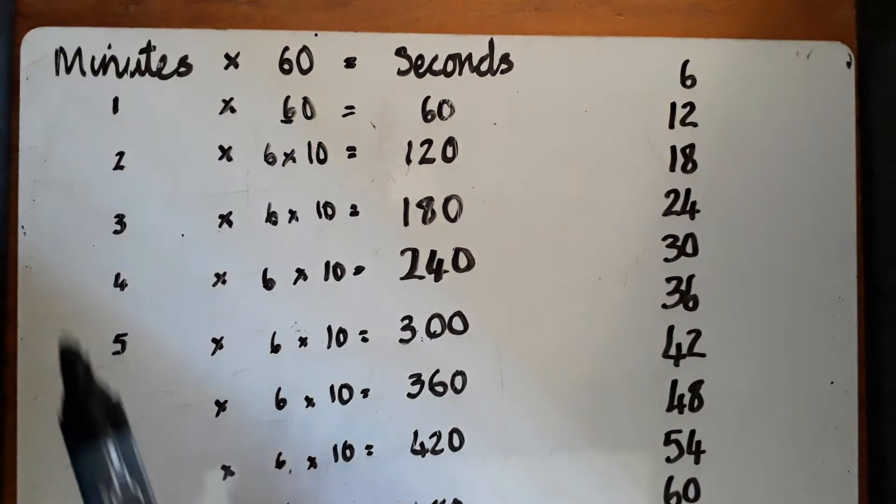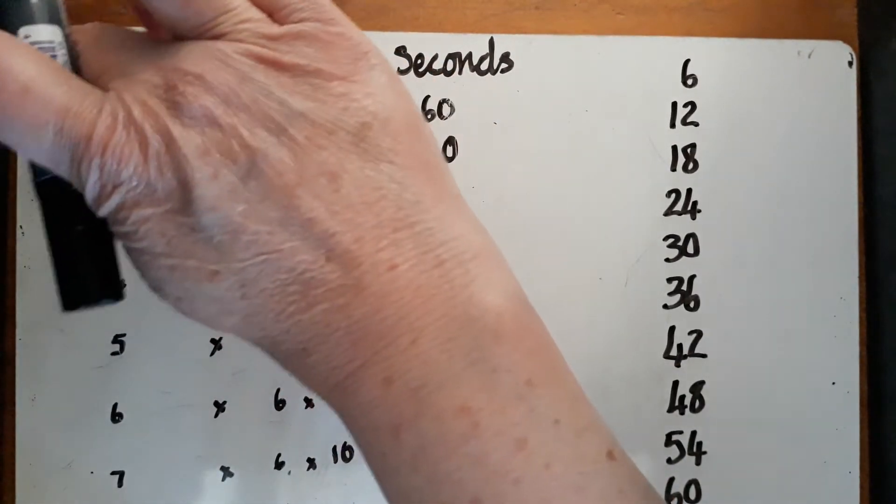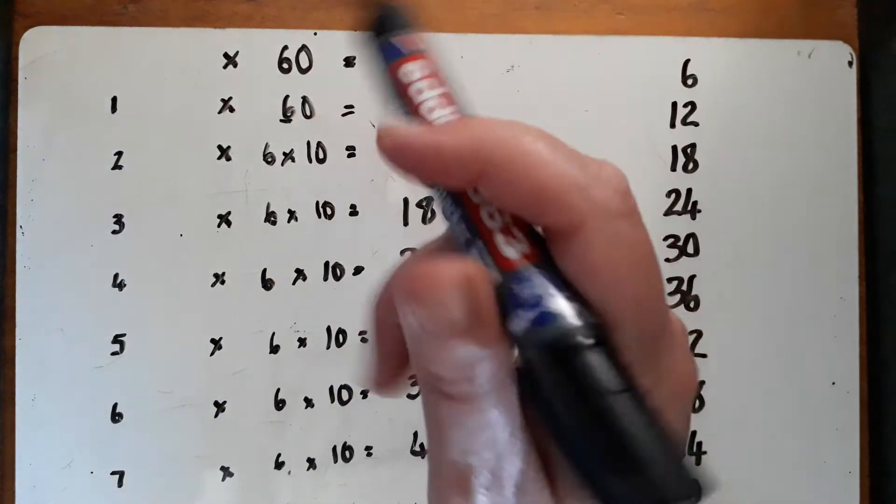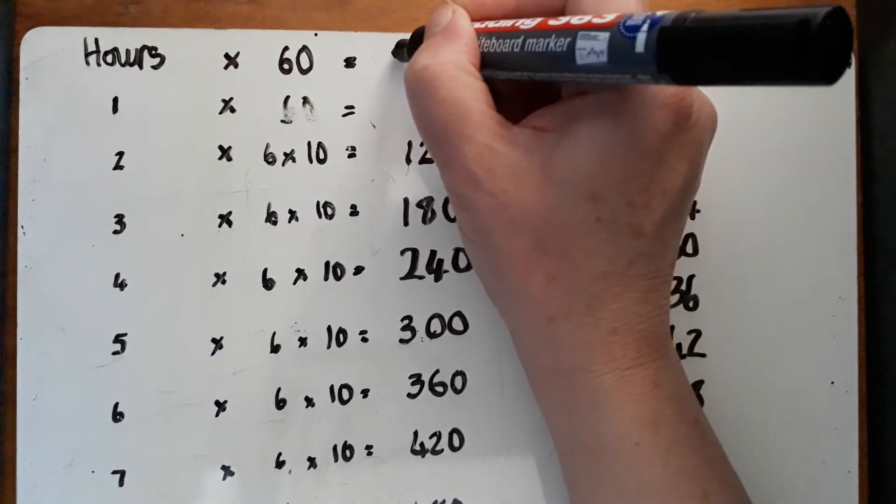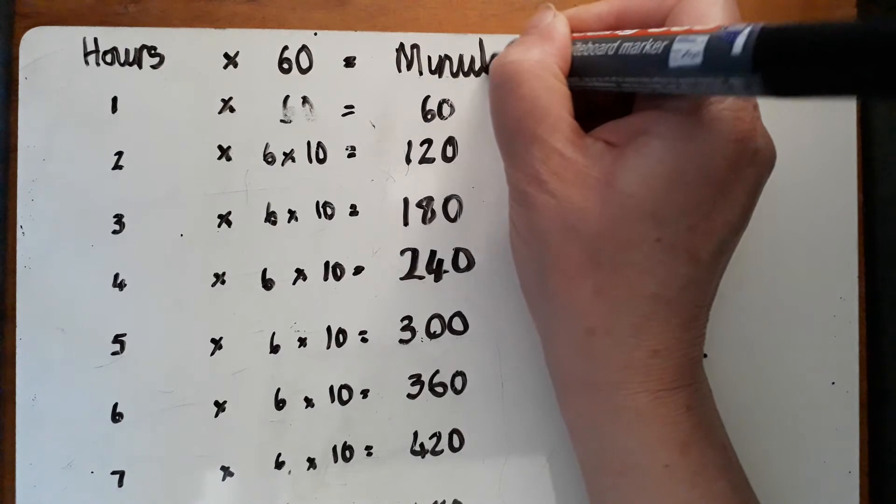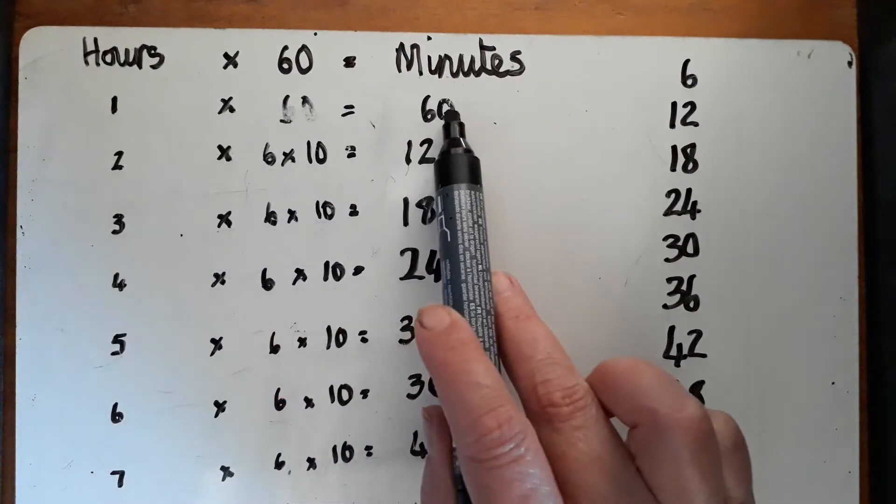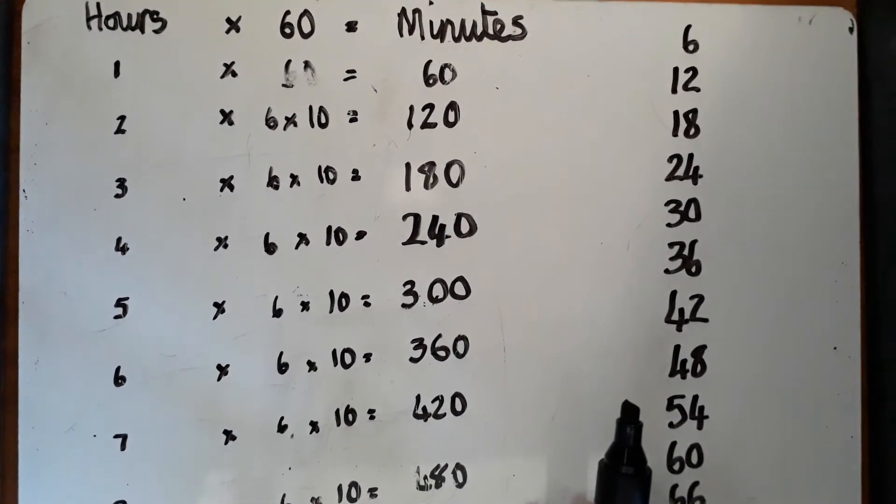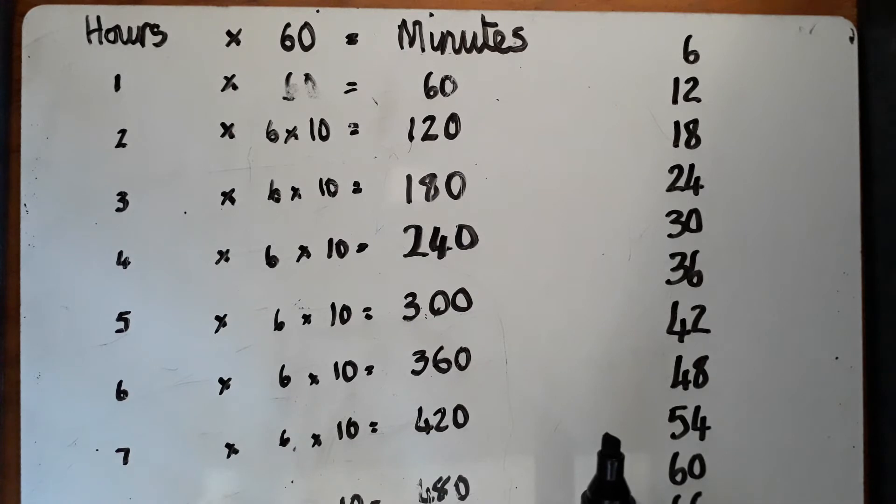And I can use this to also help me with how many minutes there are in an hour. So if this was my number of hours, and I'm converting my number of hours into minutes, I know that in one hour there are 60 minutes. So because we're going in 60s again, the same thing applies. So look for those patterns. It very much is on your understanding of your multiples of 6 today.